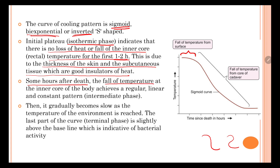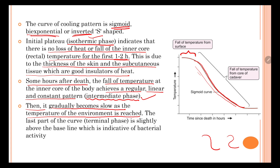After some hours, the real fall in temperature starts, achieving a regular, linear, and constant pattern — this is known as the intermediate phase. Then gradually the fall becomes slow as the body temperature approaches the environmental temperature. Once they equalize, the fall stops and we see a constant temperature matching the surrounding environment. The last part, the terminal phase, is slightly above baseline, indicative of bacterial activity.